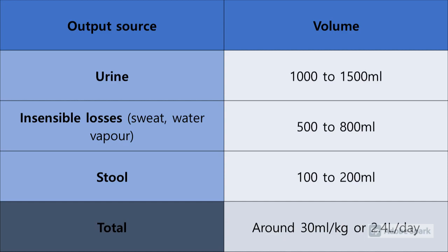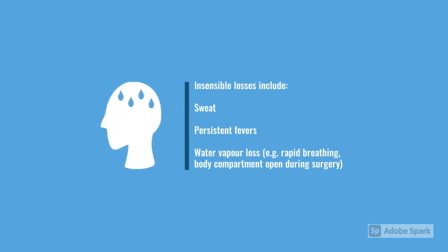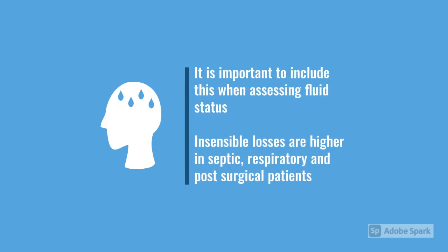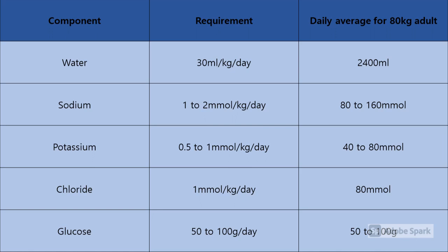Fluid lost through sweat is particularly important. If you've got someone who's persistently pyrexial, they're going to be losing a bit more fluid. If they're breathing quickly, they're losing more fluid as well — that's really important not to forget, especially in the septic patient or someone post-surgery. If a body cavity has been open for a while, you get far greater output through insensible losses. For sodium, chloride, and potassium, it's approximately one millimole per kilo per day, and glucose is between 50 to 100 grams per day.